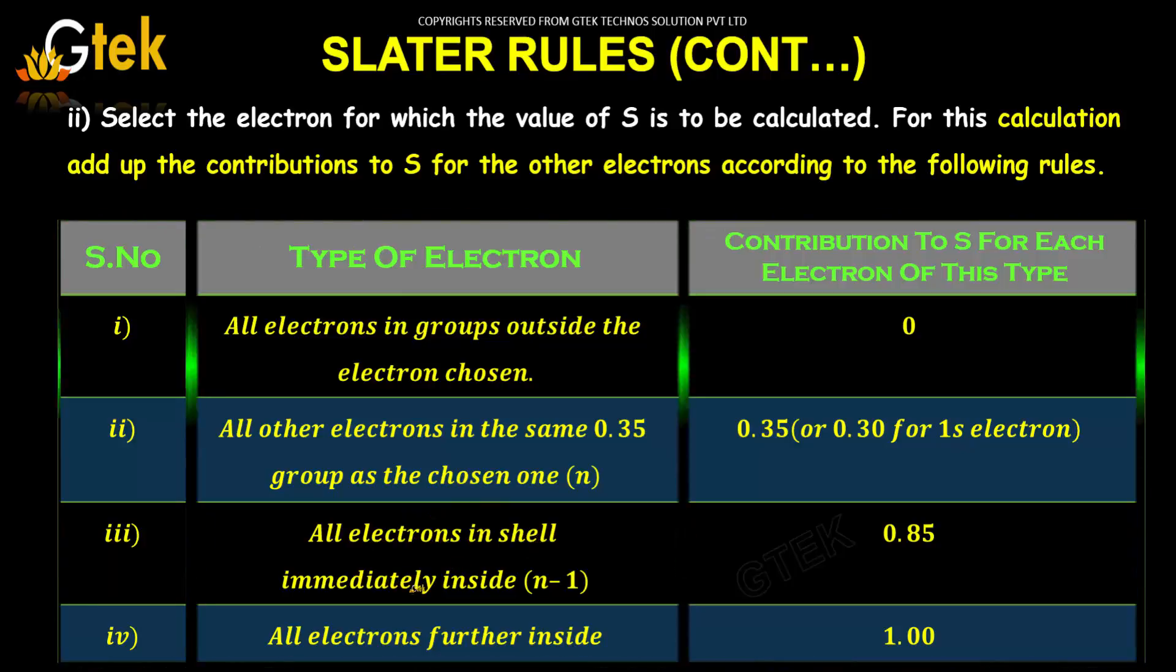All electrons in the shell immediately inside, that's n-1, is 0.85. The remaining orbitals are considered as the electrons further inside, it got 1. That's the contribution to S for each electron of this type.